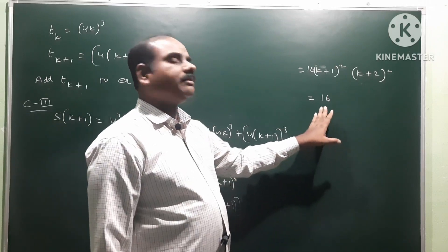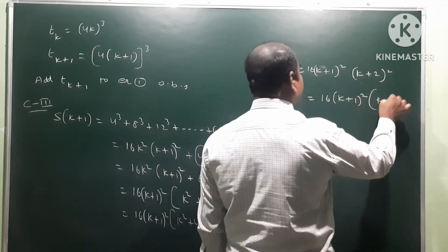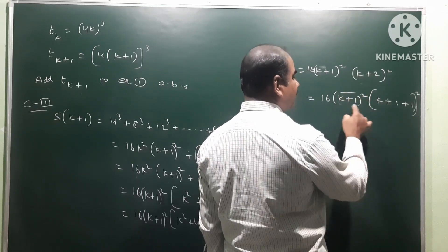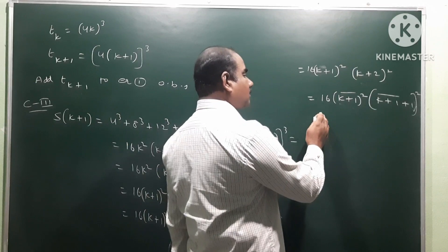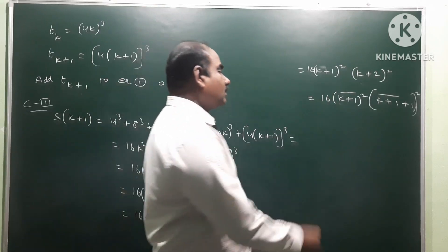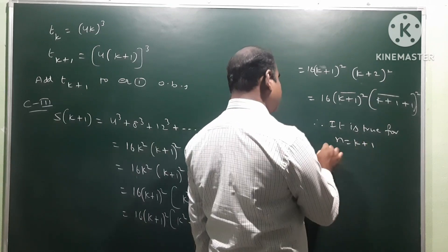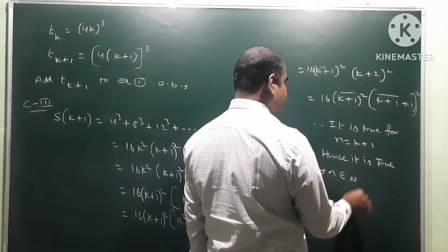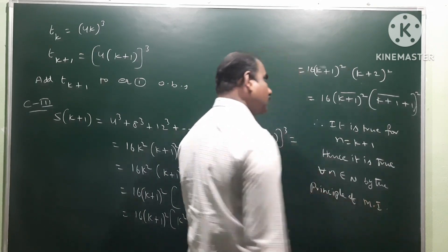This equals 16(k+1)²(k+1+1)², which matches the original RHS formula 16n²(n+1)² with n = k+1. Therefore, it is true for n = k+1. Hence it is true for all n belonging to natural numbers by the principle of mathematical induction.